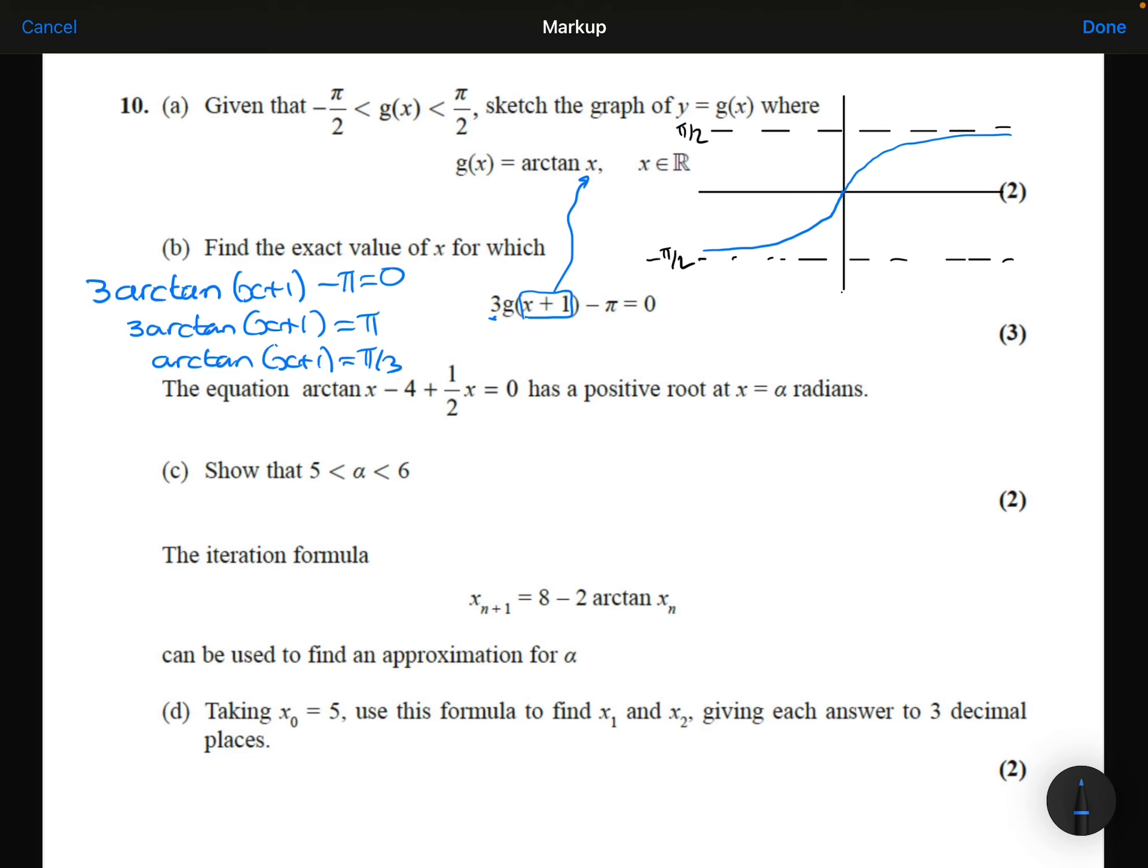To remove the arctan function to get x by itself, I'm going to do the inverse of arctan, which is tan. So taking tan of both sides, I get x plus 1 equals tan of pi over 3. And tan of pi over 3 is root 3. So I can say that x plus 1 equals root 3. Therefore, x is equal to root 3 minus 1. And that's my answer to part B.